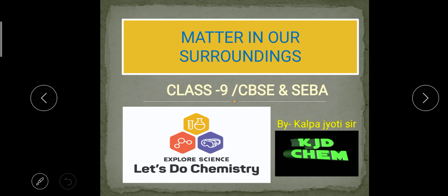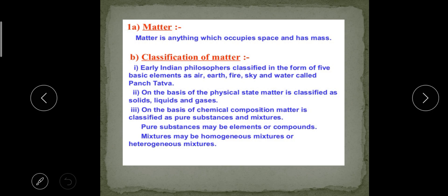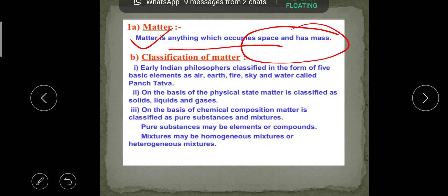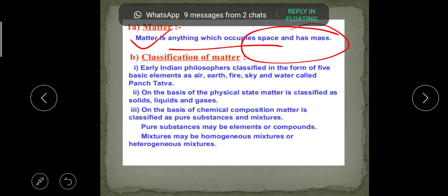We can define matter as those substances which have mass as well as occupy volume. Matter is anything which occupies space and has a specific mass. Everything around us — water, air — which occupies space and has a particular mass is called matter.